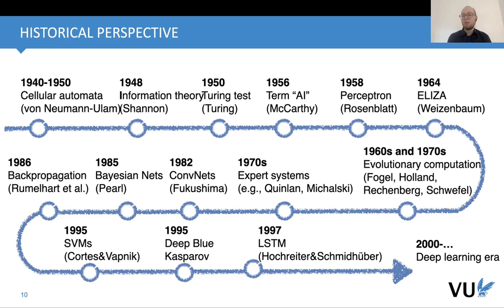Then Turing in the 50s laid out a lot of beautiful theorems and concepts, including the Turing test. McCarthy coined the term artificial intelligence. Rosenblatt proposed the perceptron model and implemented it using very old-fashioned computers. We can actually say that in the 50s this was the moment where deep learning occurred — maybe it should be called shallow learning — but this was the first time that an artificial neuron was proposed.